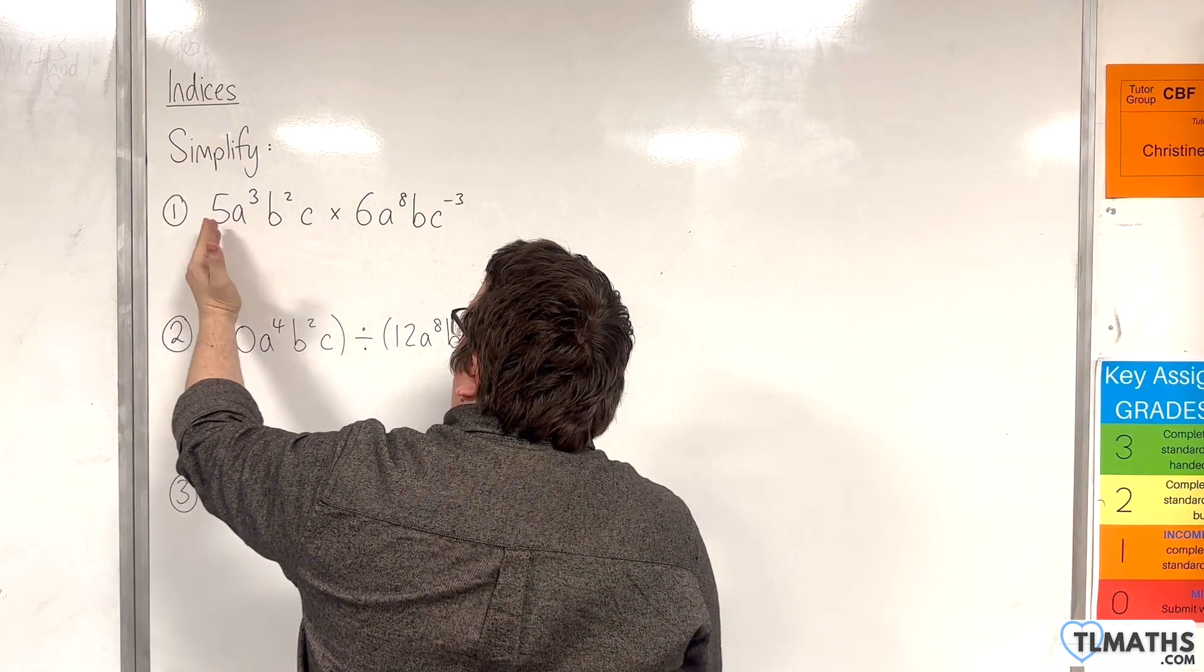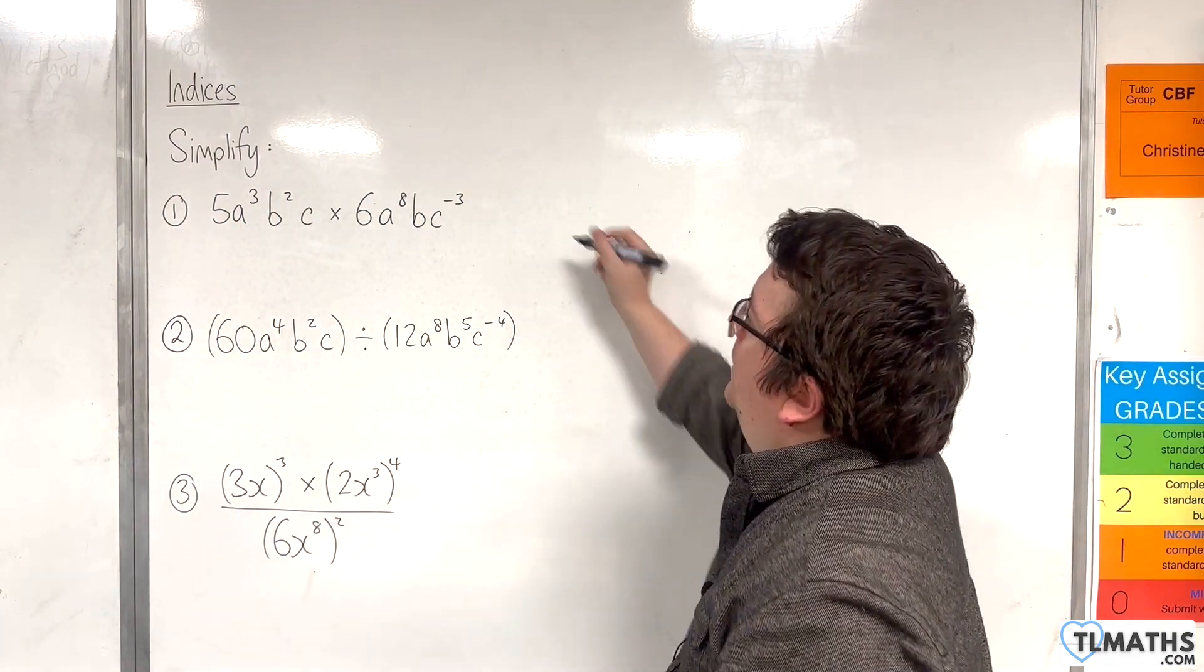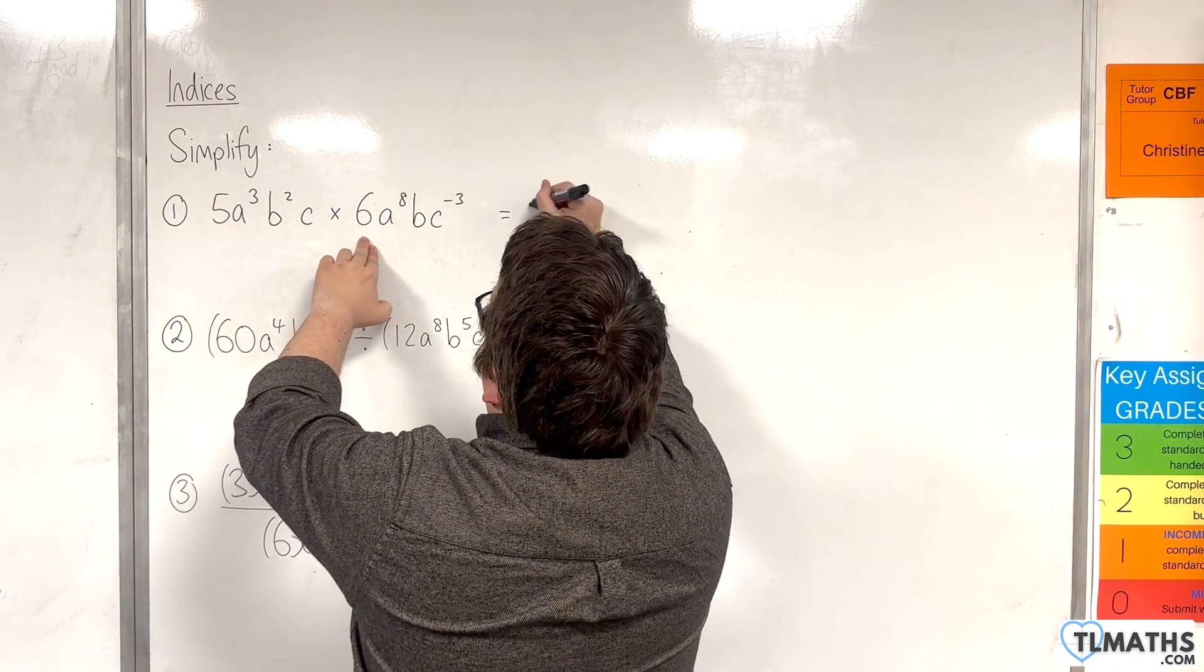What I'm going to do is I'm going to deal with the 5 and the 6 first, then the a's, then the b's, then the c's. So we have 5 times 6, which is 30.